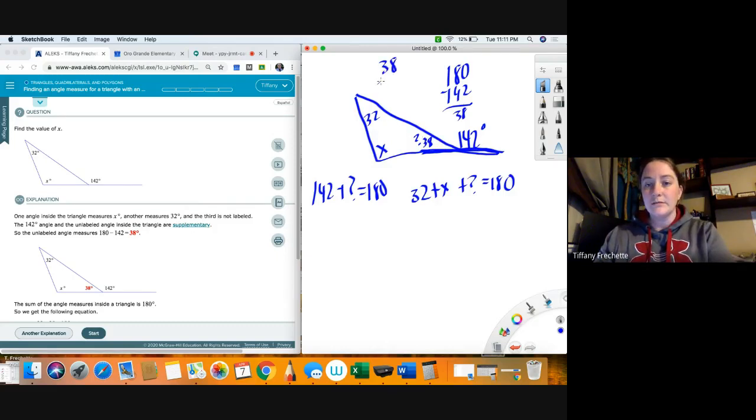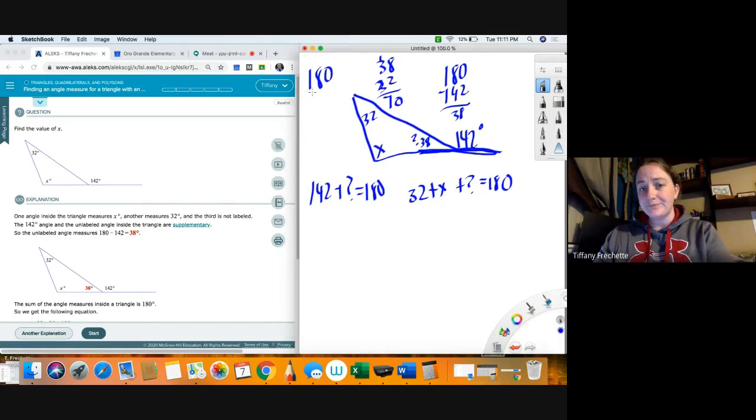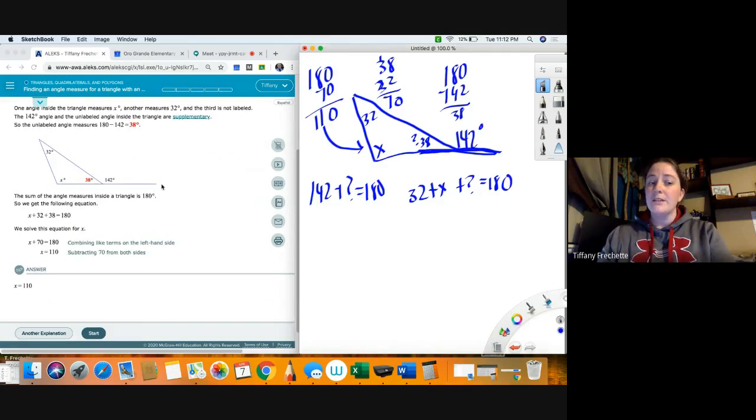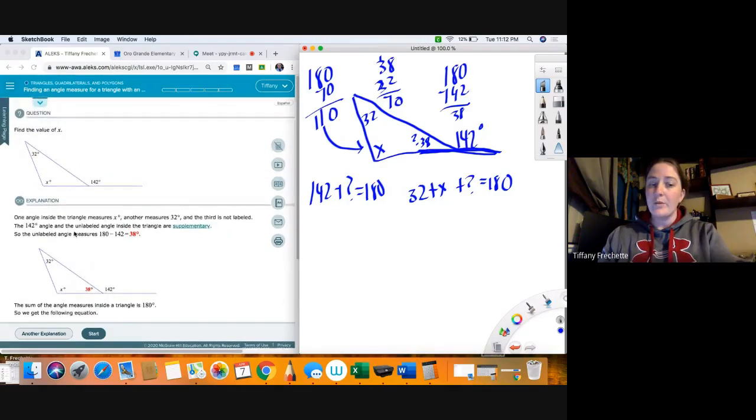And then they added these two together like this, so they have 70 degrees here. And remember all triangles add up to 180 degrees, so if I am already using 70 then I have 110 left because I subtract straight down. So X has to be 110 degrees.